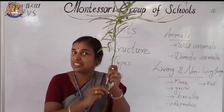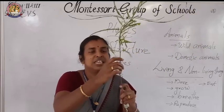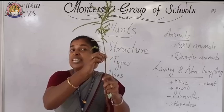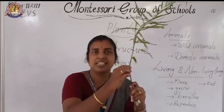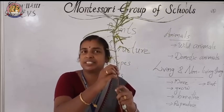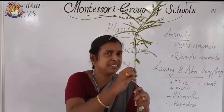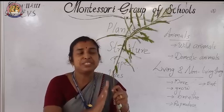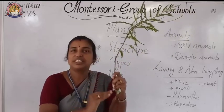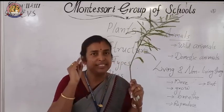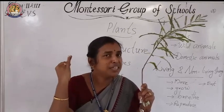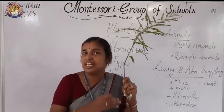Now we have studied the root system. Let us study the shoot system. What is shoot? The part of the plant above the ground is known as the shoot system. This is stem — the stem of the plant. Now let us study the function of stem. Stem keeps the plant erect — keeps it straight. That is the first function. The second function is it helps in the transportation of nutrients, water, and food. Transportation means moving things to different parts of the plant.